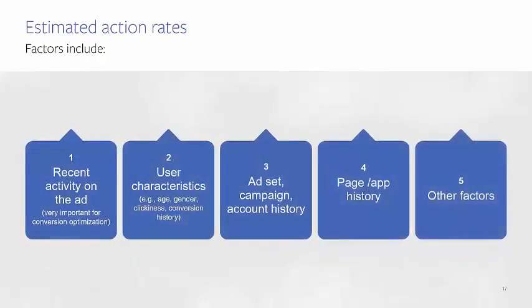Estimated action rates — you can think of them as: for every impression served, what's the probability that my desired outcome will occur? Most commonly we think of them as click-through rates or conversion rates. But there are many other factors that influence estimated action rates, including recent activity on the ad, characteristics of the user you're showing it to, your ad set, your campaign, your account history, your page or app history, among others. If you're optimizing for website conversions, set up your ad sets so they have a higher chance of capturing more conversions. Facebook typically needs around 25 conversions to properly estimate the action rate and begin optimization effectively. More data means that our optimization models can work even better on your behalf.